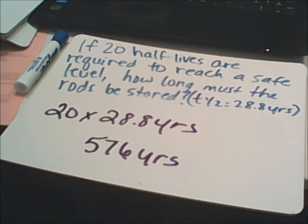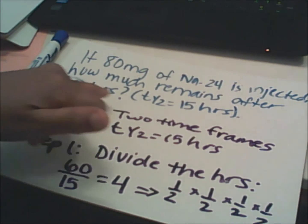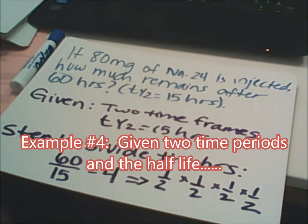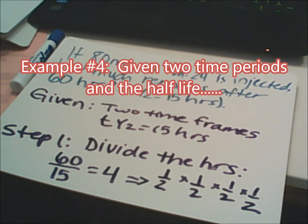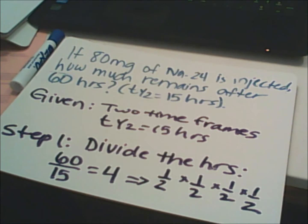576 years. Now, what happens if you're given a different type of problem where they give you a sample amount and two time frames? Here it is: if 80 milligrams of sodium-24 is injected, how much remains after 60 hours? The half-life is 15 hours.